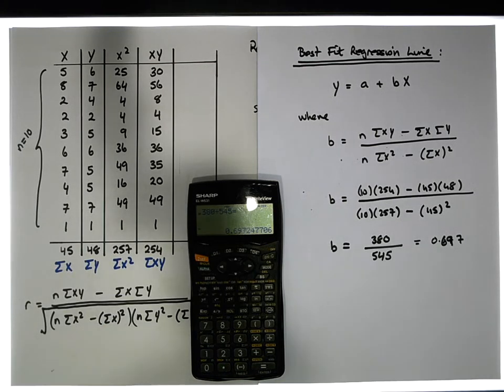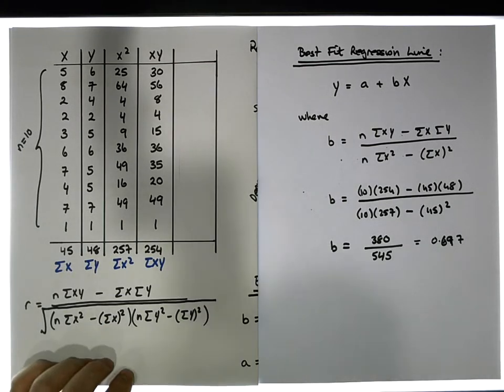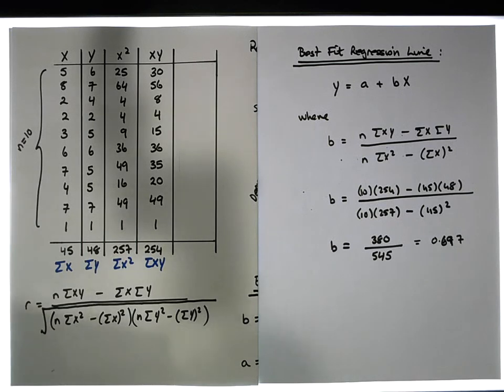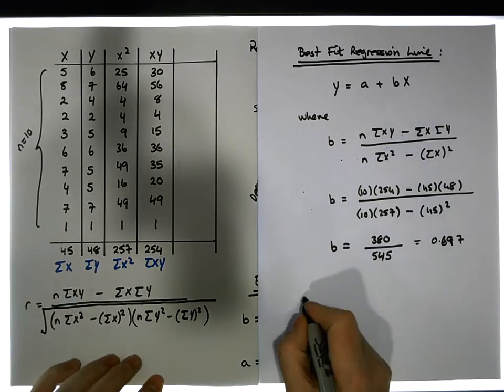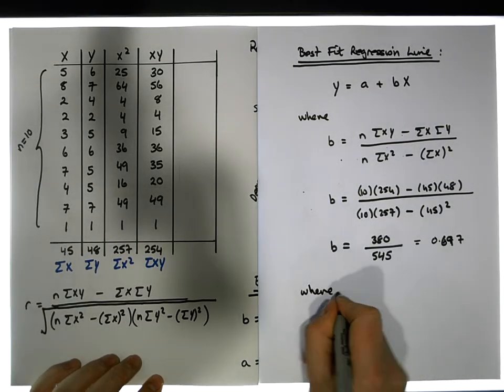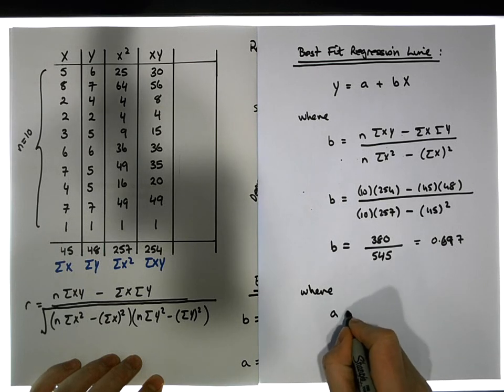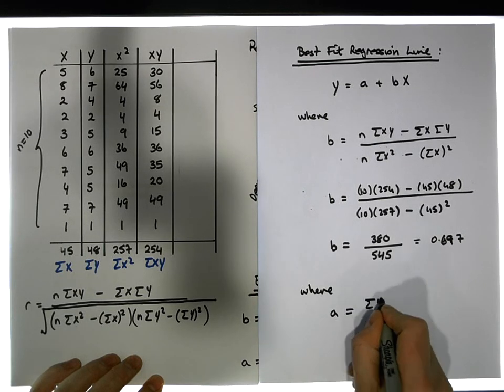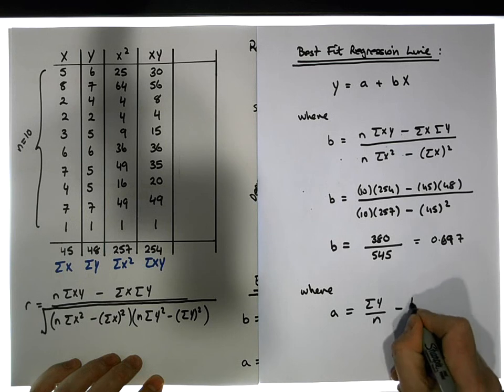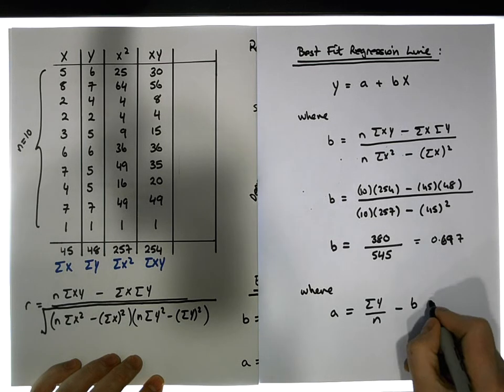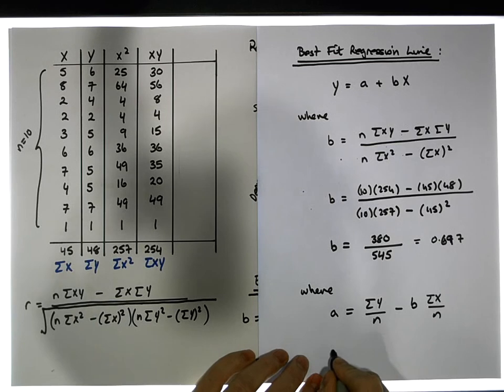What about the y intercept, where does the line intersect the y axis? Well we also have where a, our intercept, is equal to the sum of the y's divided by n minus the b value, the slope that we've just calculated, times the sum of the x's divided by n.